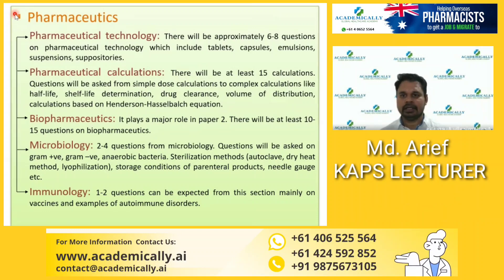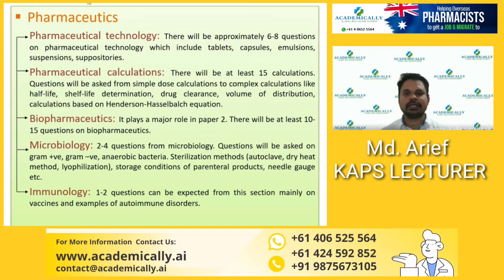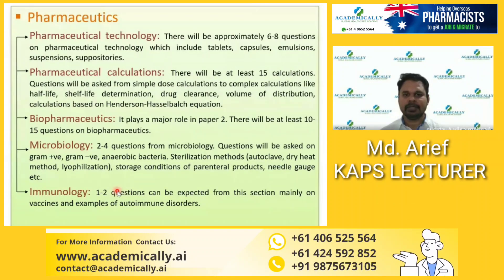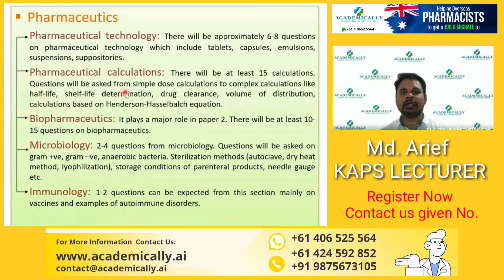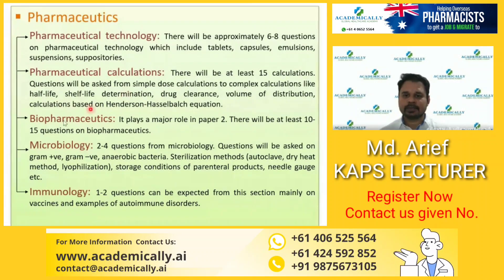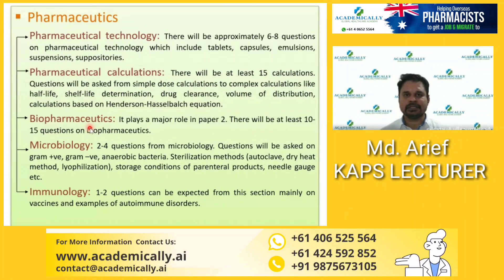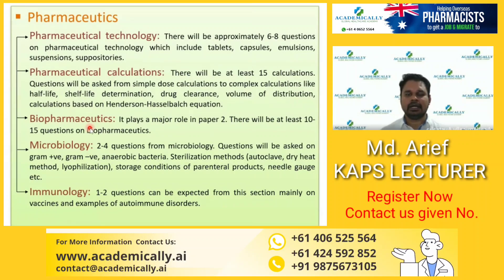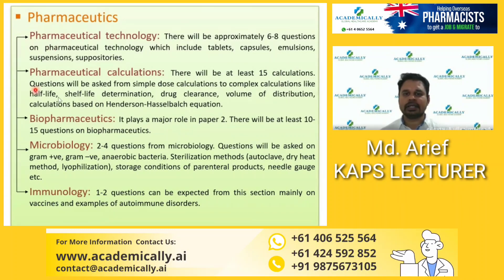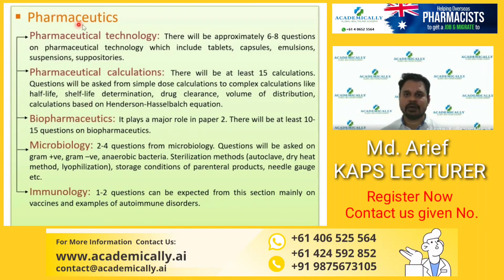Pharmaceutical technology, calculations, biopharmaceutics, microbiology, and immunology all together are covered under pharmaceutics, and from this component you need to score 50 percent. Pharmaceutical calculations is the main part that helps you clear the pharmaceutics component — along with biopharmaceutics, these two are the most important parts under pharmaceutics.